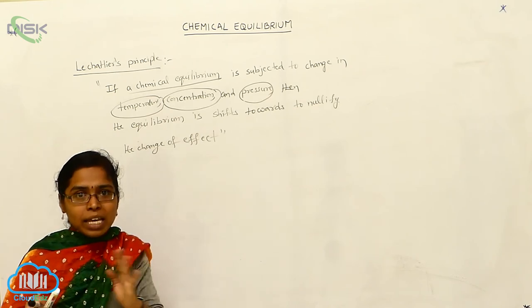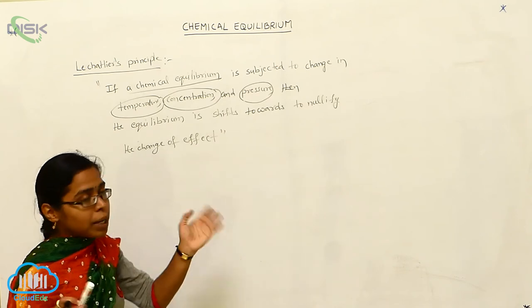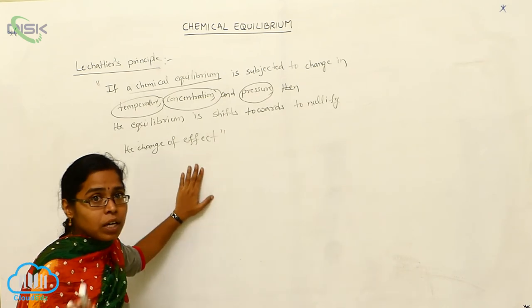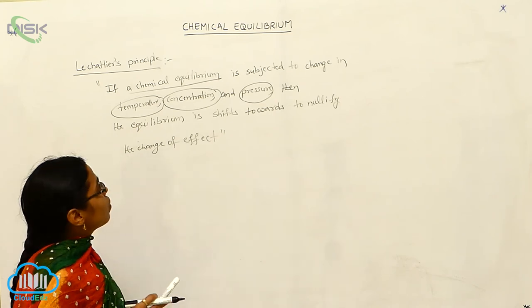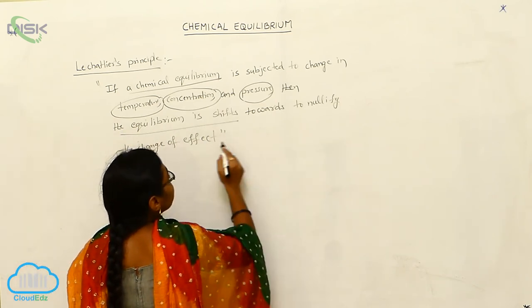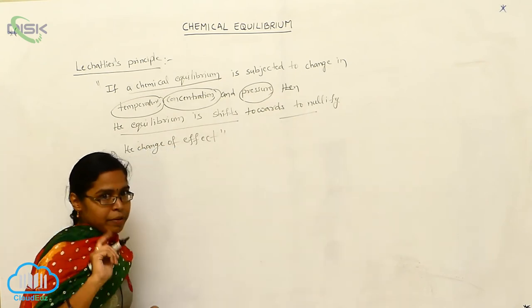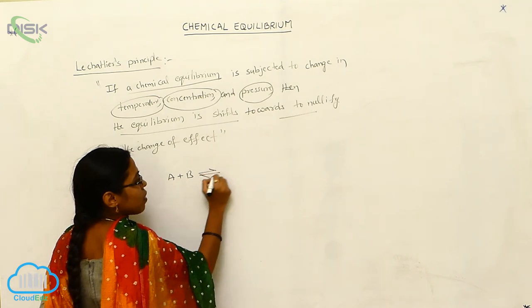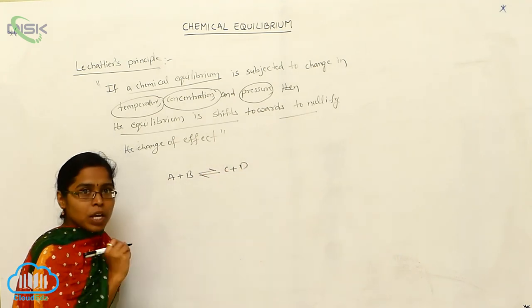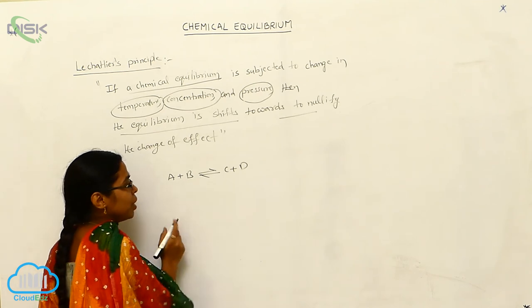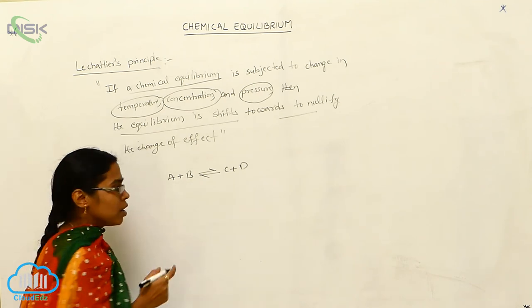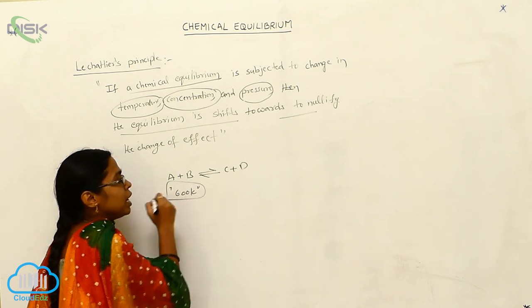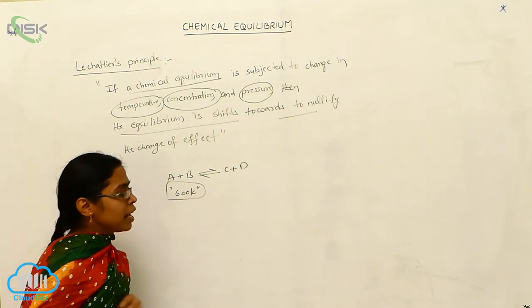I can explain with one example. Consider the equilibrium reaction A + B gives C + D. Normally it occurs at around 600 Kelvins — chemical equilibrium takes place at 600 Kelvins. Now let's say temperature is increased.